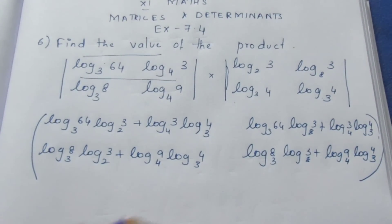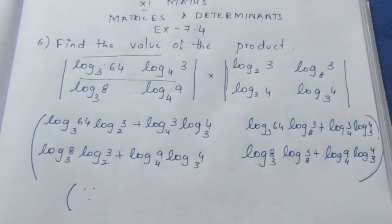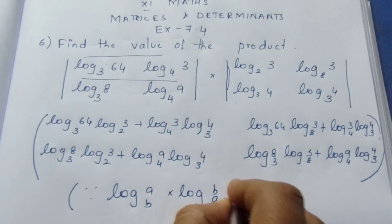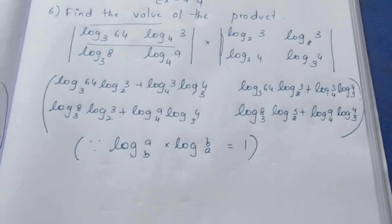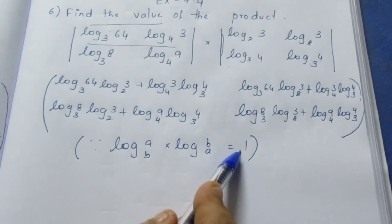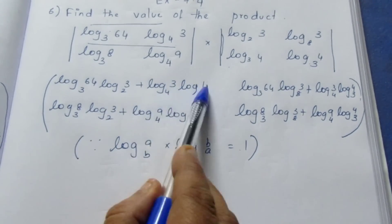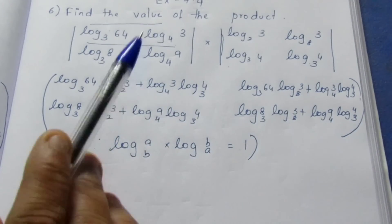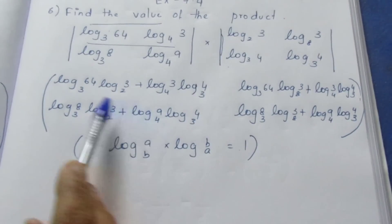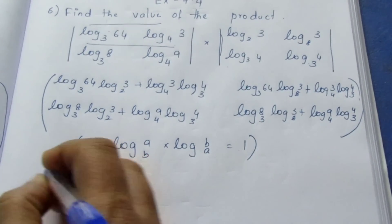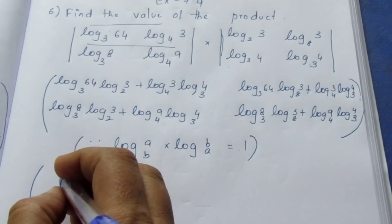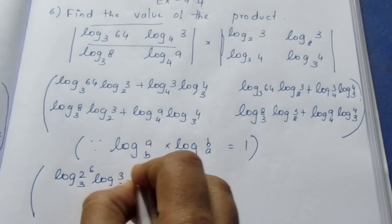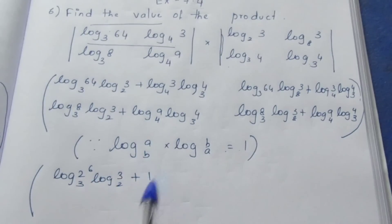So how did you get it? Now you have a concept in logarithm — log a base b into log b base a, this value is 1. This base value is equal to 1. And it is equal to 1 and it is equal to 9 and 64. This is equal to prime factorization — now log 64, prime factorization: 2 power 6, log 2 power 6 base 3, log 3 base 2 plus 1.